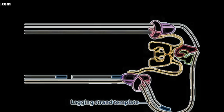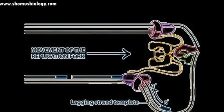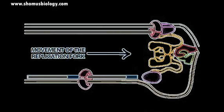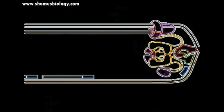the lagging strand template must be folded so that its polymerase can create DNA in the 5' to 3' direction, which is reverse of the leading strand, and still can move in the same direction because the overall movement of the fork is the same.